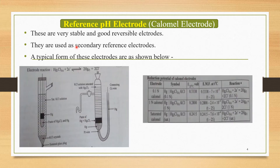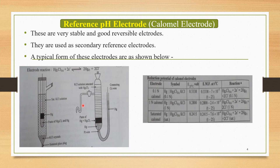The reference pH electrode is also known as the calomel electrode. These are very stable and reversible electrodes, used as secondary reference electrodes. The typical forms of these electrodes are shown in this figure — there are two forms of this calomel electrode.